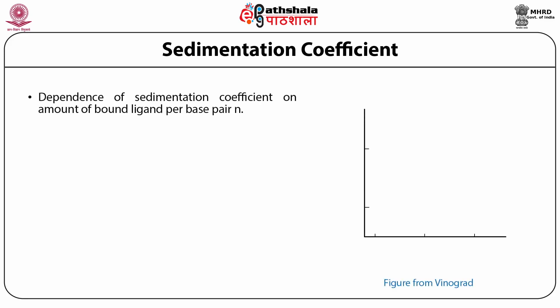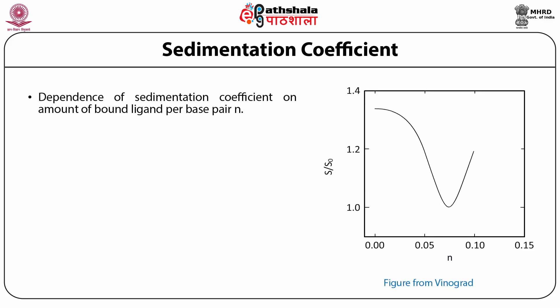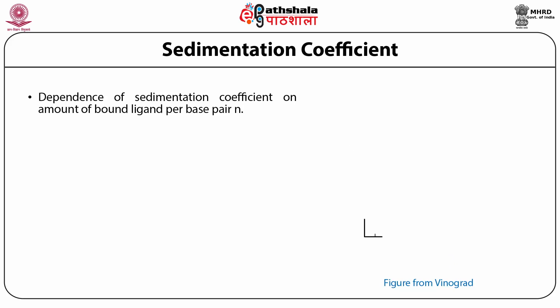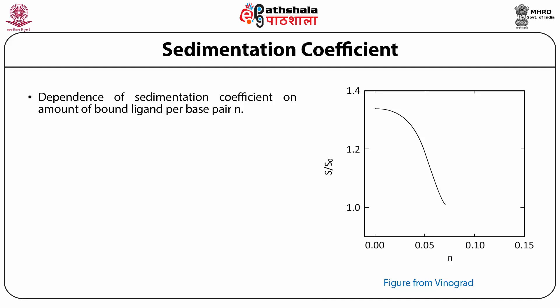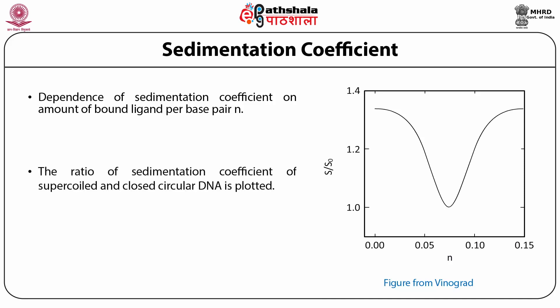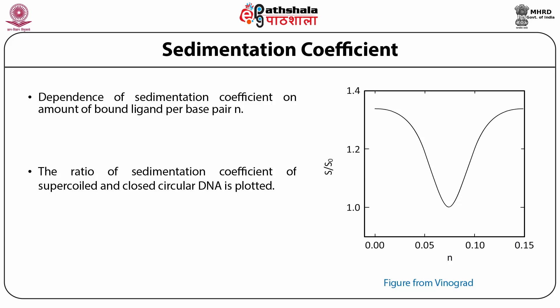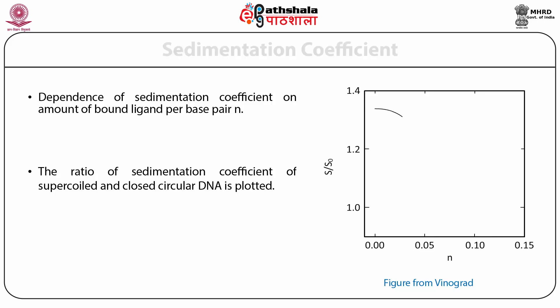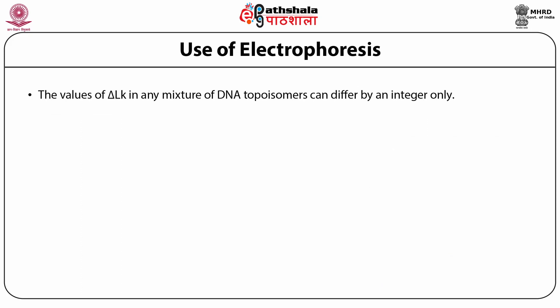A typical example is shown in this picture, where the dependence of sedimentation coefficient on the amount of bound ligand per base pair is plotted. The ratio of the sedimentation coefficient of supercoil and closed circular DNA is plotted, and we see a dip reaching a minimum value at a particular value of nu. The value of delta LK in any mixture of DNA and topoisomerase can differ by an integer only, so electrophoresis is used to determine delta LK.